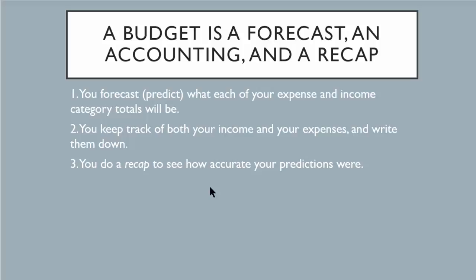Another way to say this is that a budget is a forecast, an accounting, and a recap. As a forecast, you predict what you think will happen — this makes people really nervous, but it's imperative that you learn to do this. As an accounting, you keep track and write everything down: money in, money out, just like a checkbook. And as a recap, you talk about exactly what happened and how well you did in terms of your forecast.